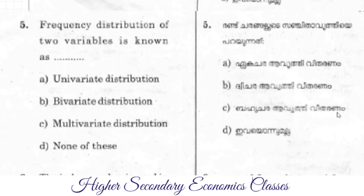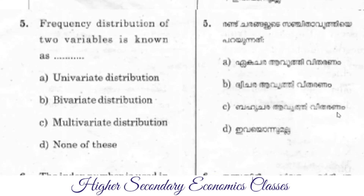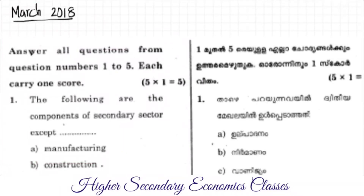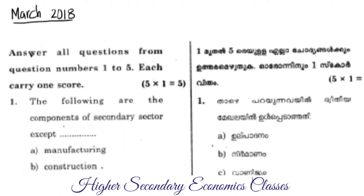Frequency distribution of two variables is known as bivariate distribution. This is different from univariate and multivariate distributions. The index number used in India to measure changes in retail prices is the consumer price index.